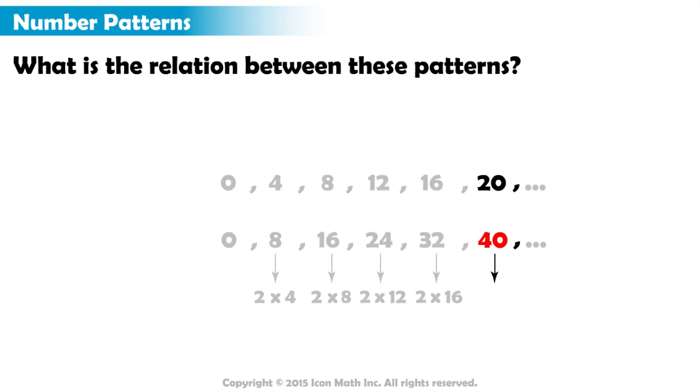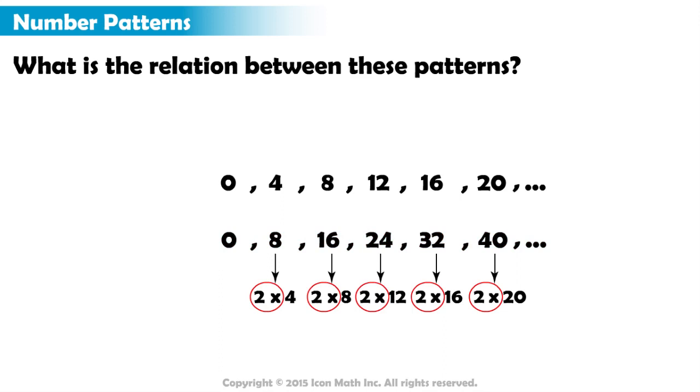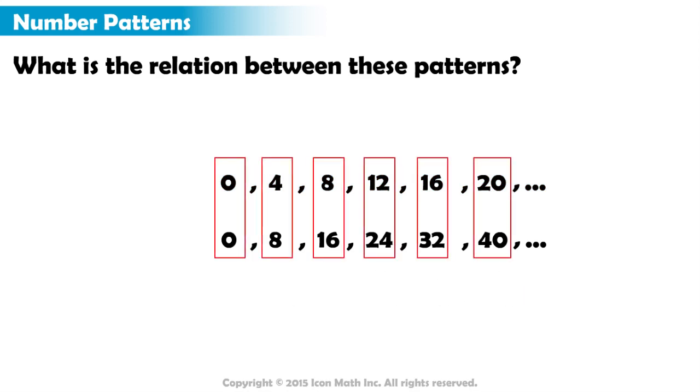Now we can make a conclusion. We say that the elements in the second pattern are two times greater than the elements in the first pattern. In other words, for each pair of corresponding elements, the second element or the bottom element is equal to two multiplied by the first or top element.